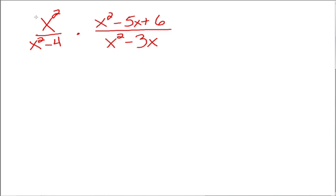Now one thing you could do is literally multiply straight across — distribute that x squared through to get x to the fourth minus 5x cubed plus 6x squared. And then multiply x squared minus 4 times x squared minus 3x on the bottom, and get this really big ugly looking fraction.